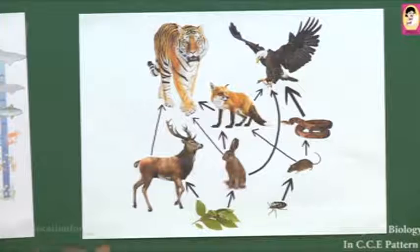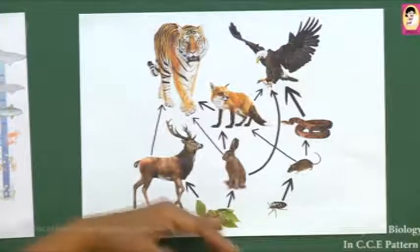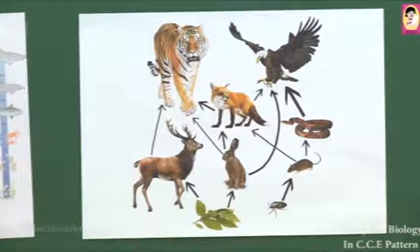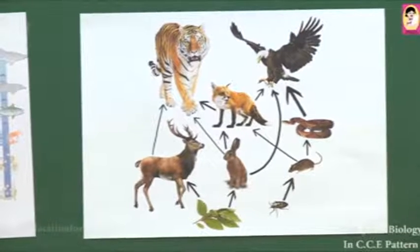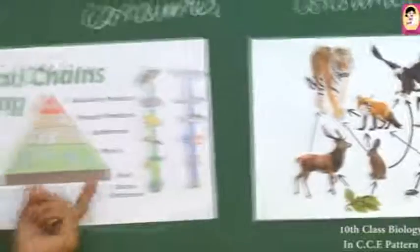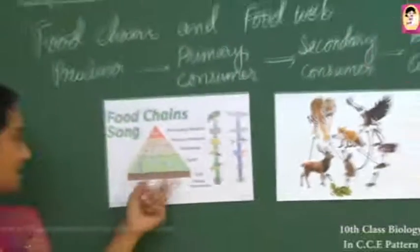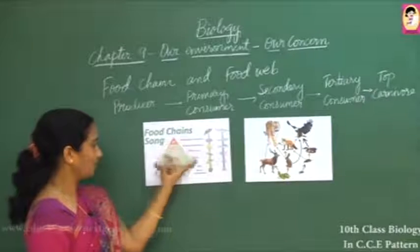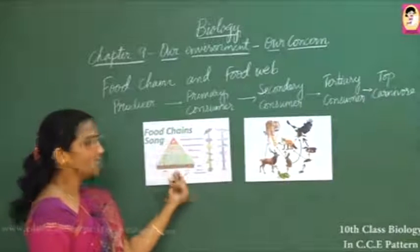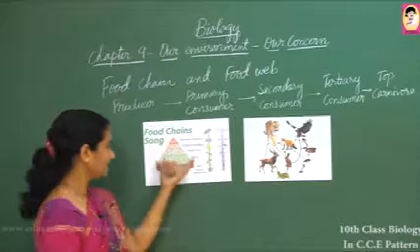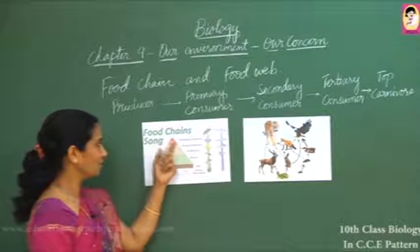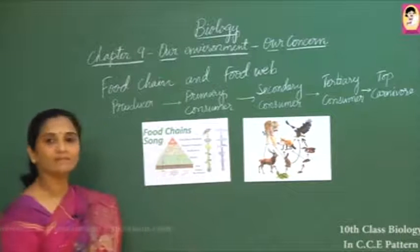As animals move from one level to another in the food chain, the structure takes on a pyramid shape. You can see this pyramid form in the food chain — the topmost carnivore sits at the very top, with each lower level increasing in number and biomass.